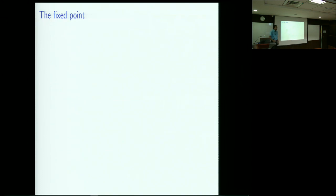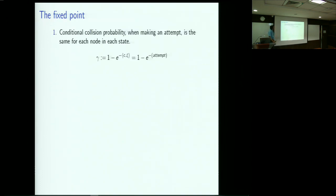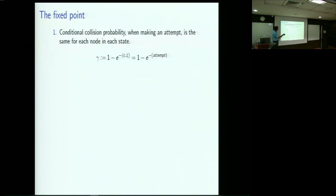The conditional collision probability — conditional on you transmitting in this particular slot — is one minus the probability that nobody else is transmitting. So gamma equals one minus e to the minus attempt. That's the collision probability. Now here is another heuristic: assume that the node interactions decouple so that a certain field has been created involving collision probability gamma, and I look at how one particular node's evolution can be analyzed.